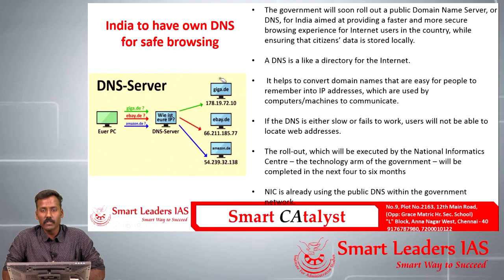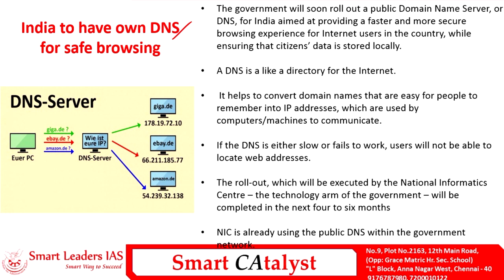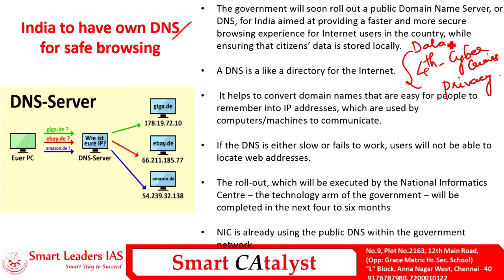The fourth article is about the provision of a domestic domain name server by the Indian government. The world has become more interconnected, and this has come at the cost of cybercrimes — India ranks fourth in the world among countries with high cybercrime. There are also issues of privacy. To address this, the government has been introducing data localization norms, and one important step is having India's own domain name server. This DNS is aimed at providing faster and more secure browsing for internet users and ensuring that user data is stored within the boundaries of India.